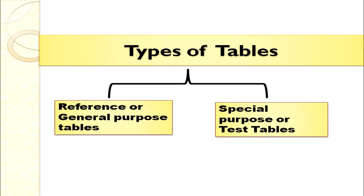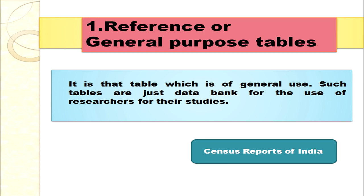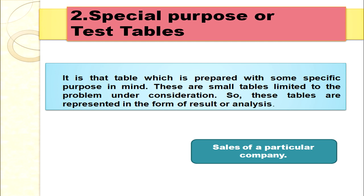Once we know the parts of a table, we can discuss the different types of tables. There are two types: reference tables, popularly known as general purpose tables, and special purpose tables, also called test tables. The reference or general purpose table contains a lot of information and serves as a data bank for researchers and students — for example, census reports of India, which contain information on employment, income, education, and more.